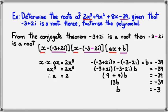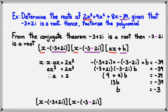Once we have a and b, we've factorized the polynomial. It factorizes to: (x minus (minus 3 plus 2i)) multiplied by (x minus (minus 3 minus 2i)) multiplied by (2x minus 3). Just remember with the conjugate root theorem: if a complex number is a root, then the conjugate of that complex number will also be a root. That's it for this session — thanks for watching.